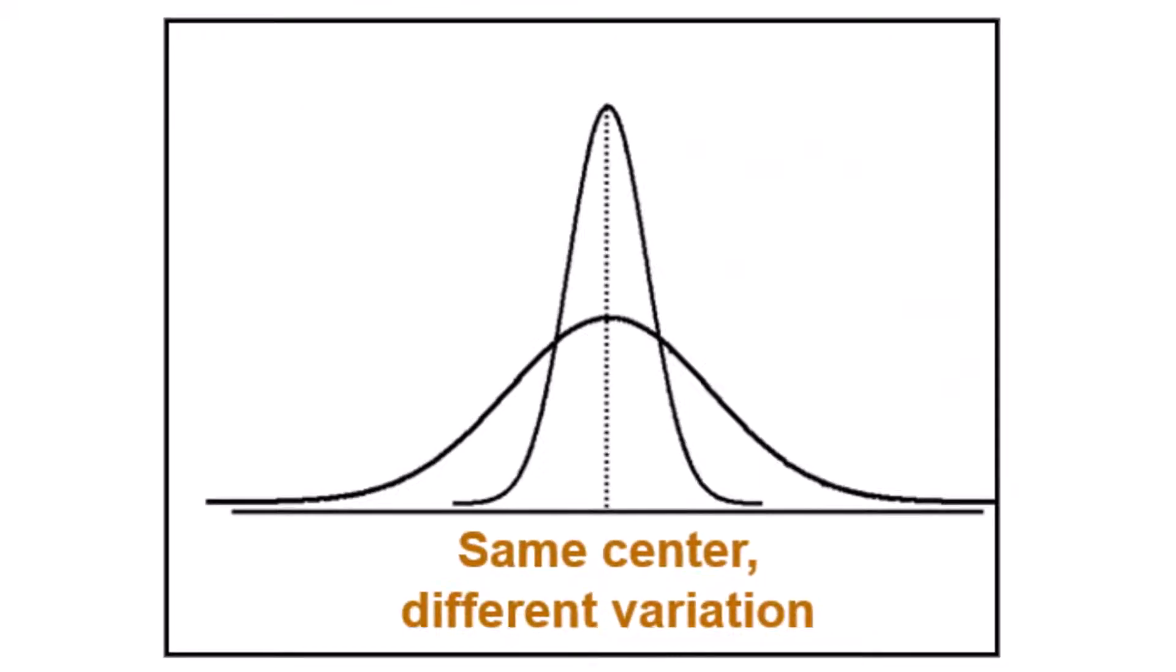So we can see in this diagram here, we have two shapes that represent our spread. The taller curve that is tighter or narrower means there's less variation because the values that we've collected are much closer together. Now the wider curve has greater variation because the numbers we collected are spread out much further from each other.